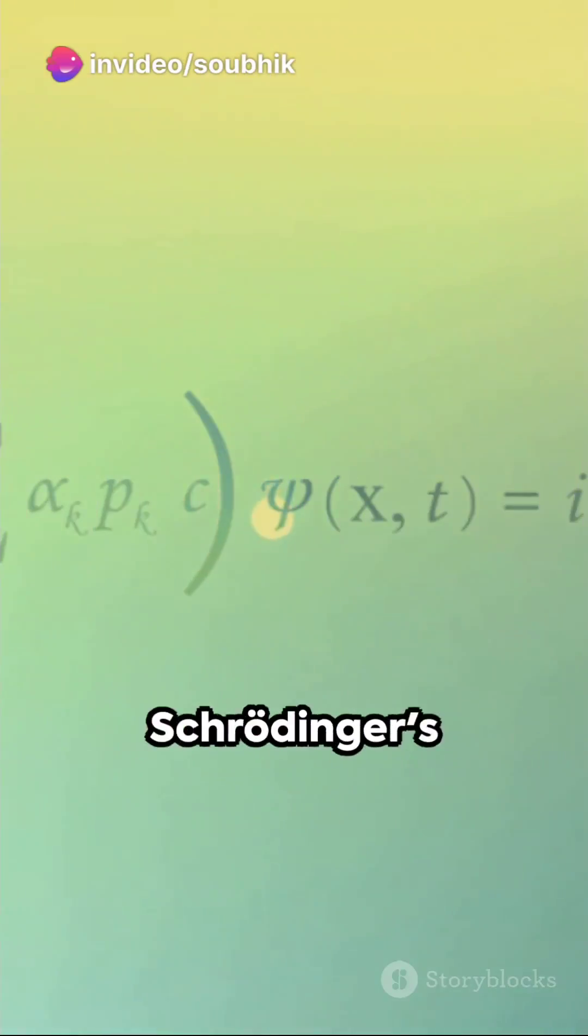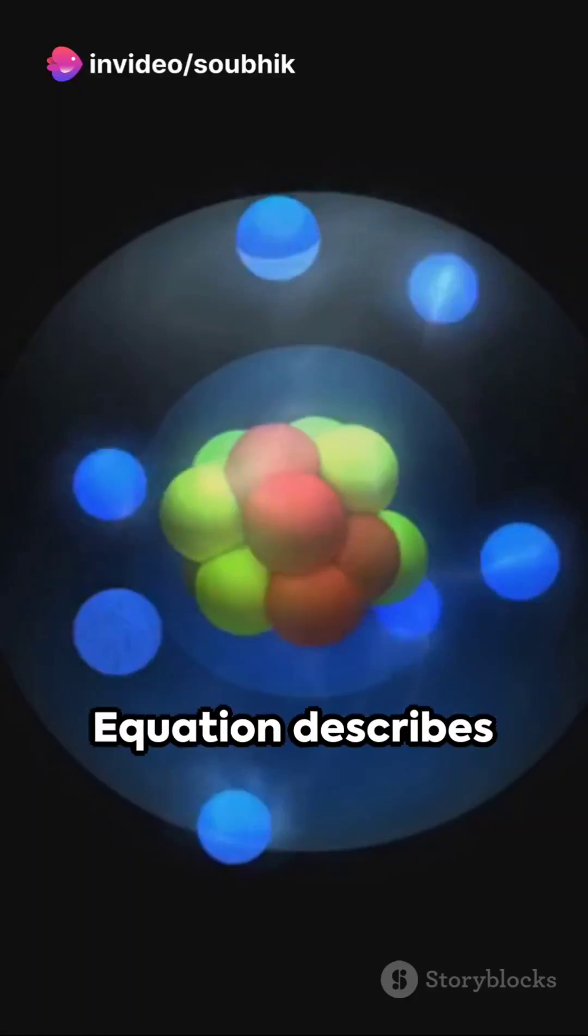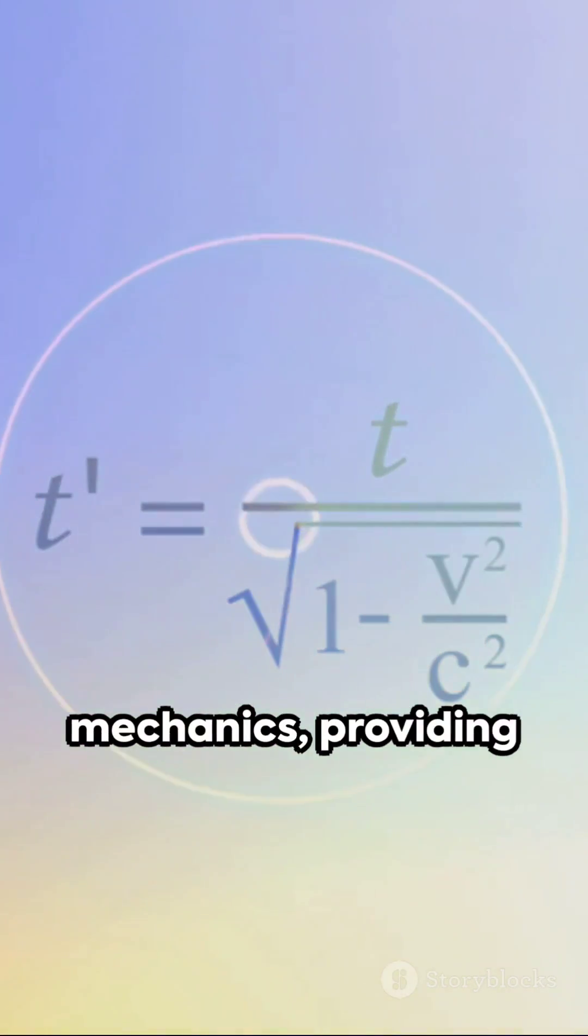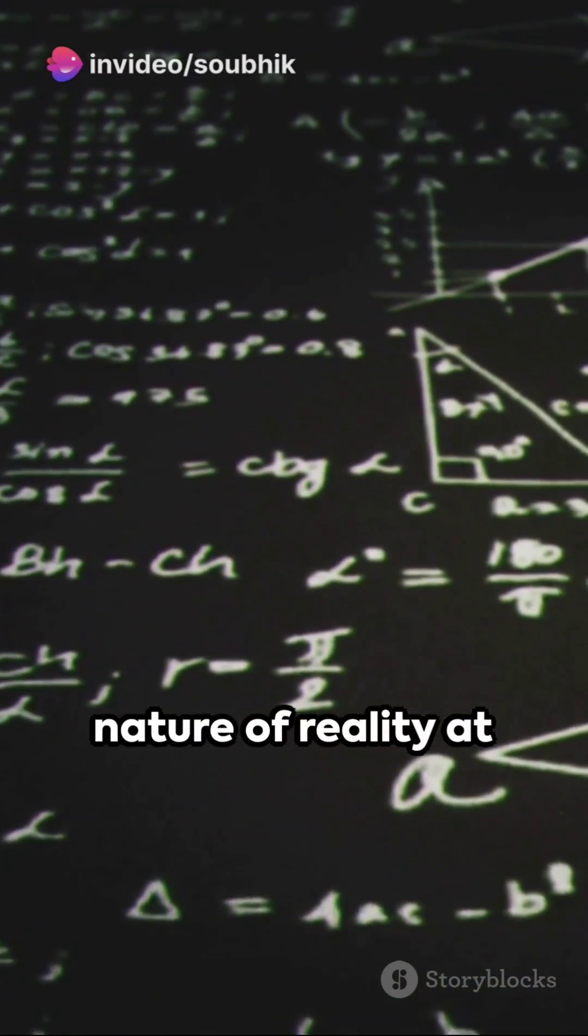Let's break it down. At its core, Schrödinger's equation describes the behavior of particles at the quantum level. It's a fundamental equation in quantum mechanics, providing insights into the nature of reality at its smallest scales.